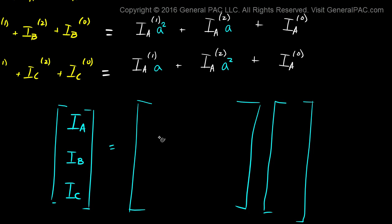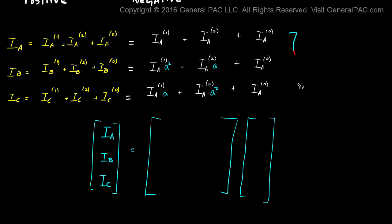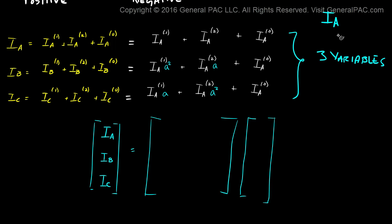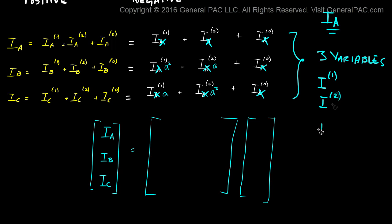Now we need to fill in this gap. We're using Ia as our reference variable. Because we already know that Ia is our reference variable, we don't necessarily have to show this anymore — it's already assumed. Our three variables are: Ia positive sequence, Ia negative sequence, and Ia zero sequence.